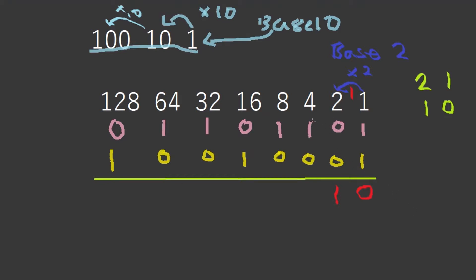Now 1 plus 0 is 1, and then 0 plus 1 is 1, and then 1 plus 0 is 1, and 0 plus 1 is 1. Now this was a very easy addition.